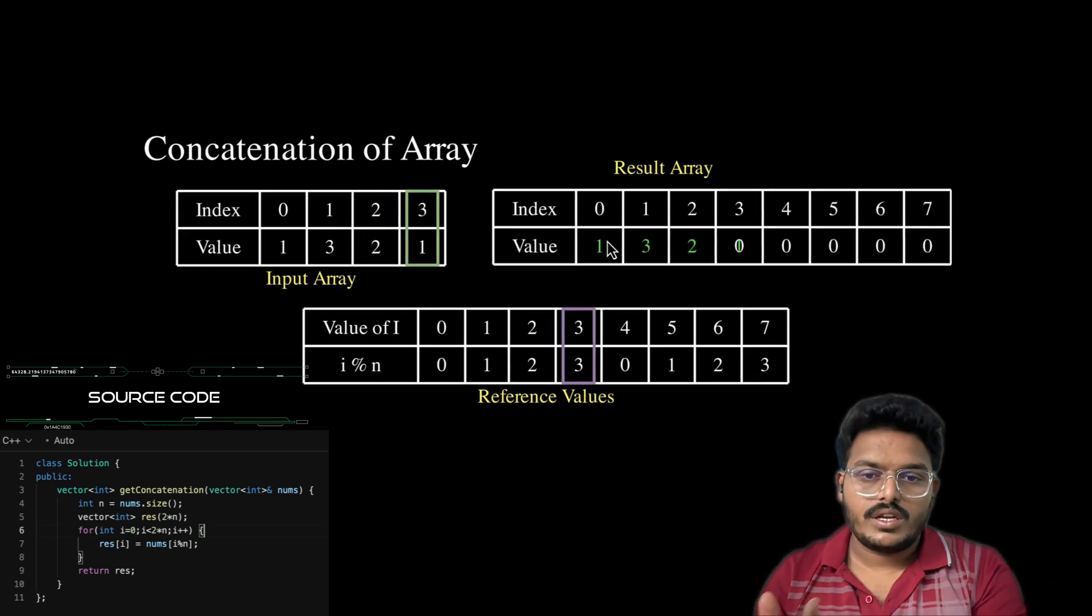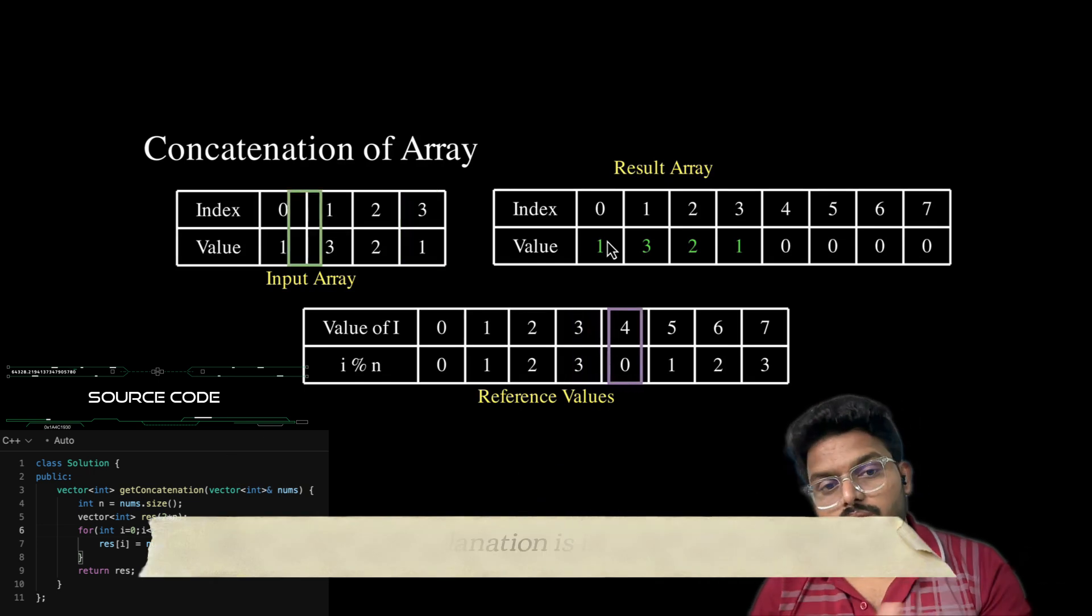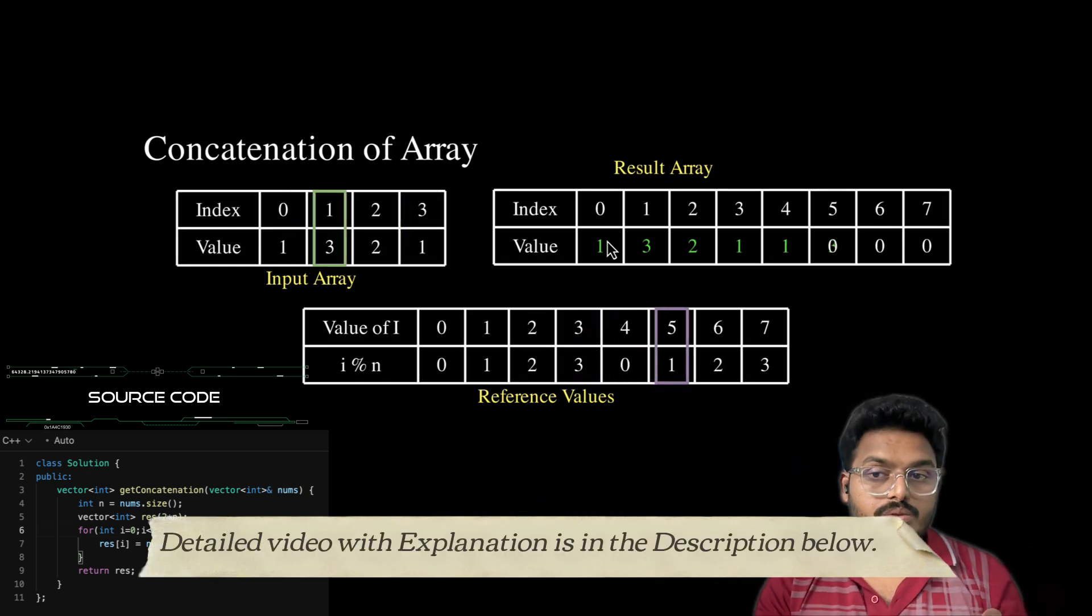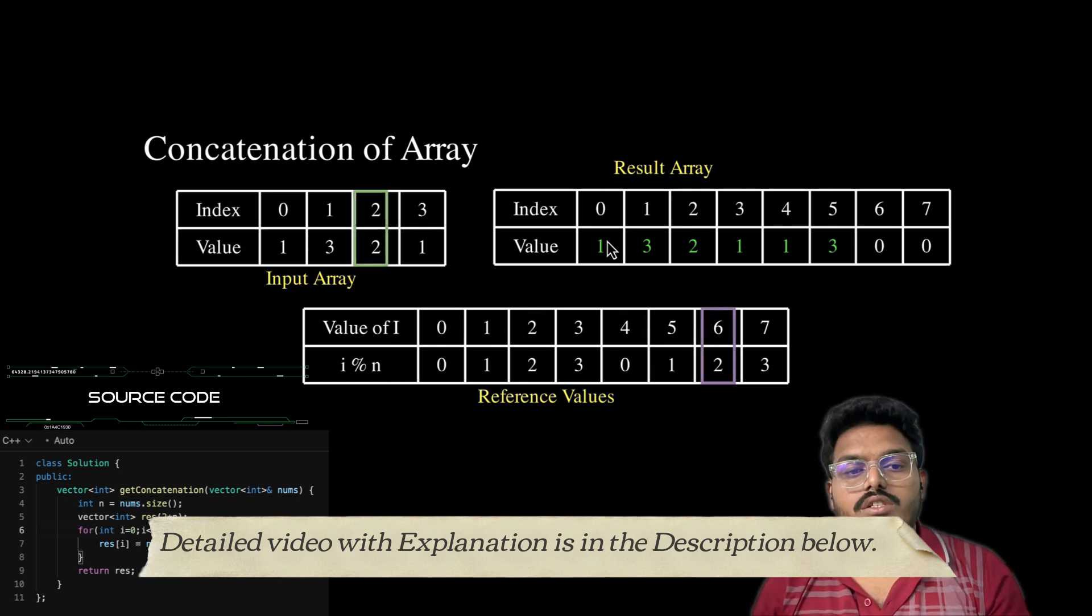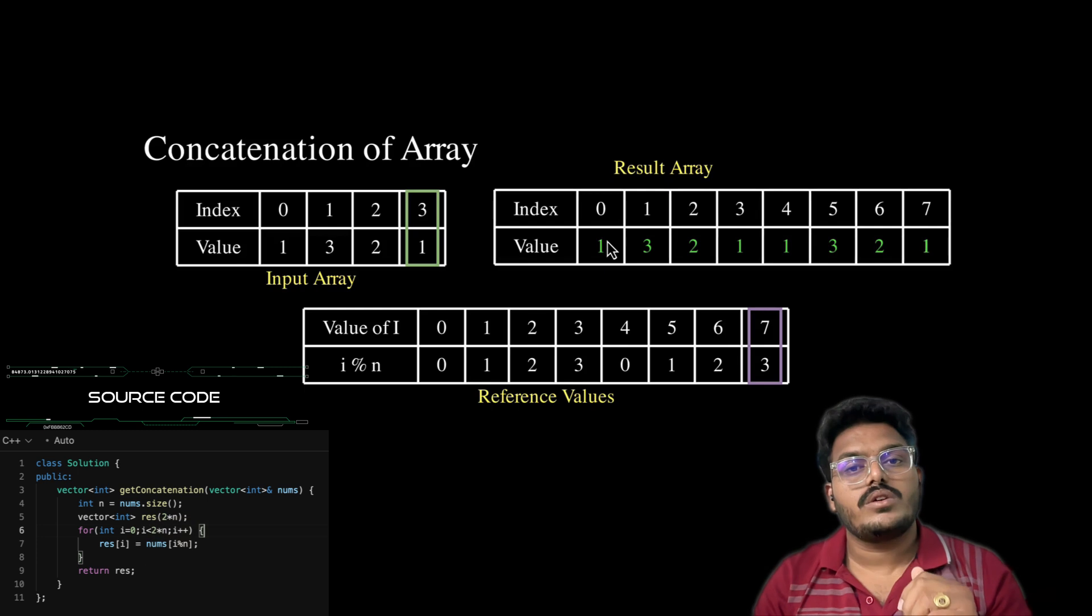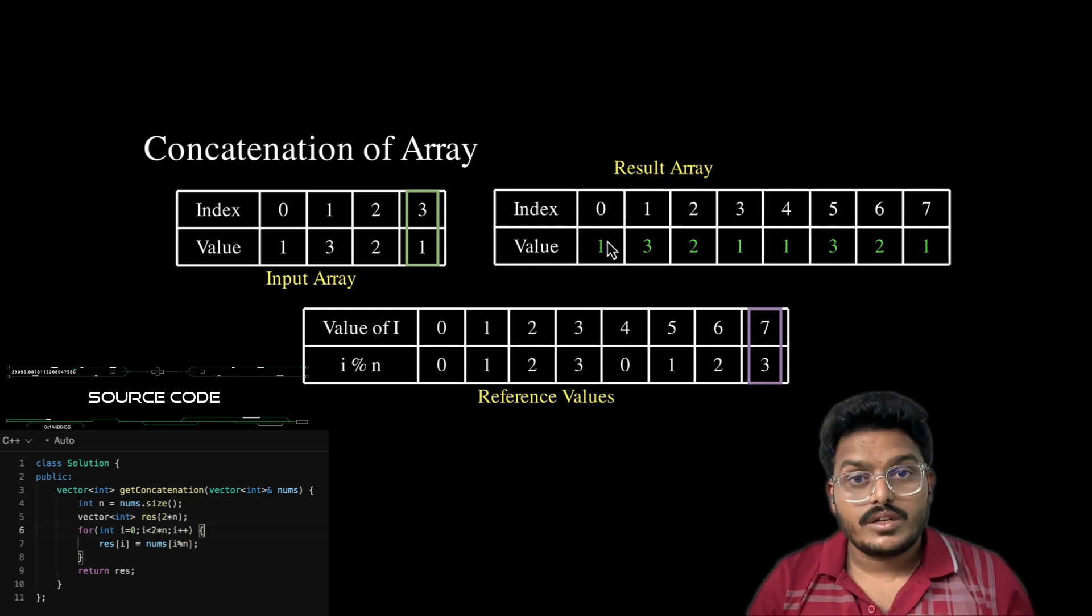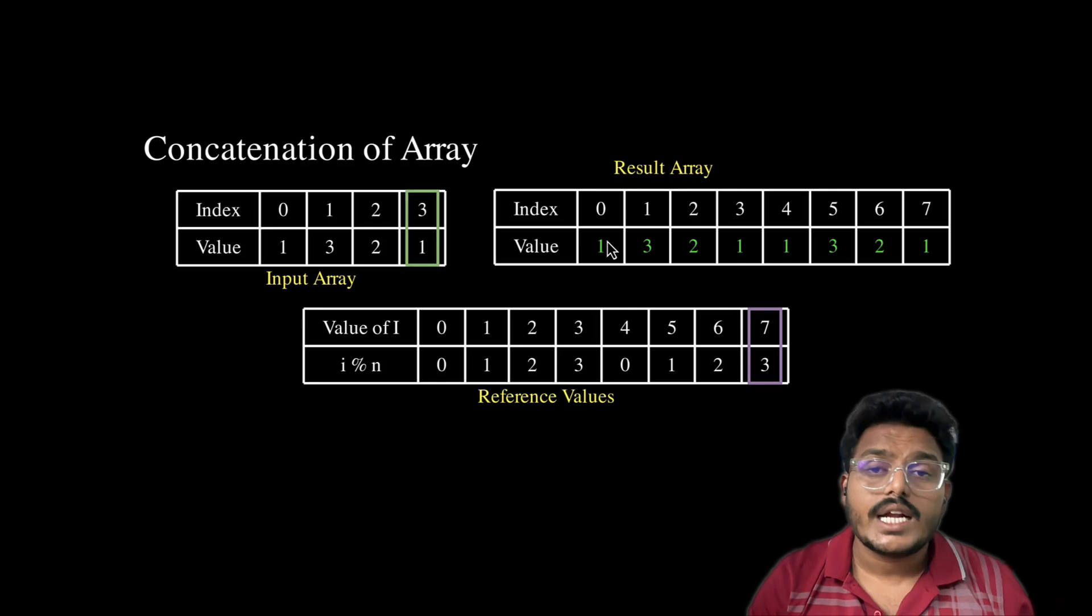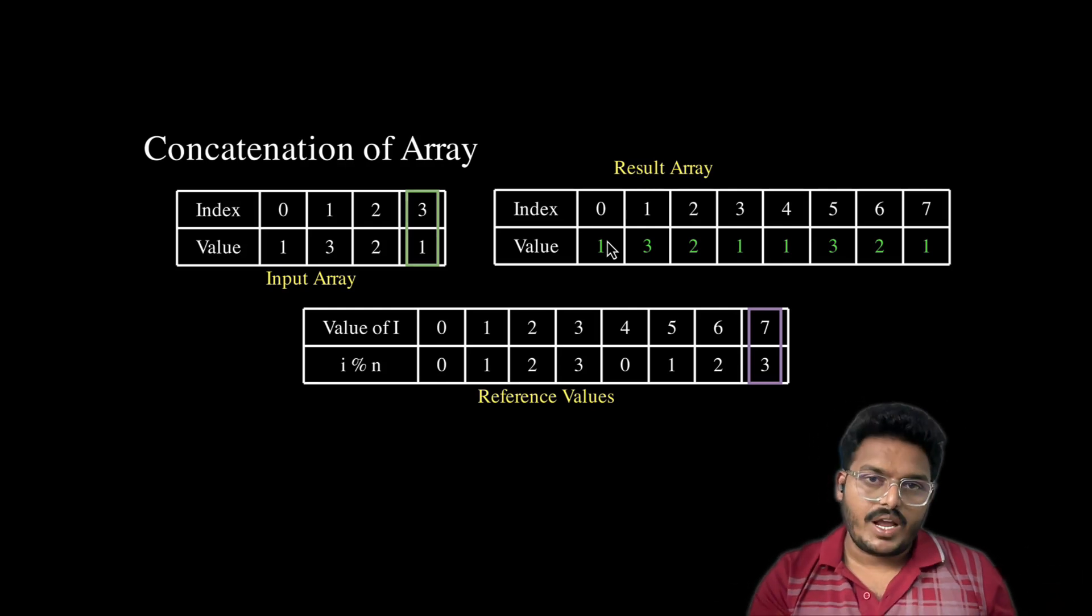The array starts from the beginning again. The fourth value is transferred to the result array. At index 5, value 2 is again transferred, and the last value is also transferred. The copying of array is successfully completed. This is how the concatenation of array works in the background.